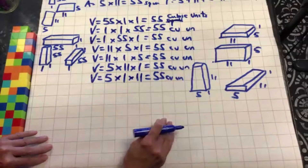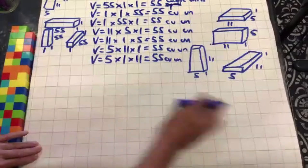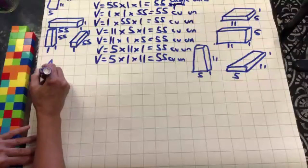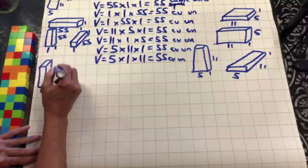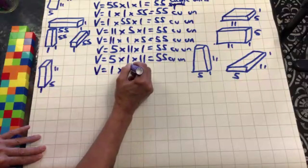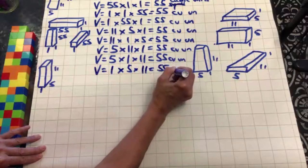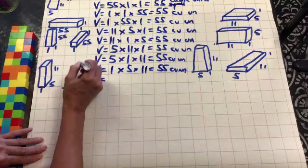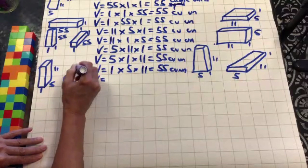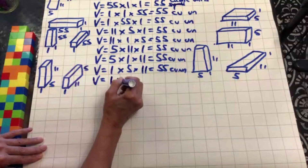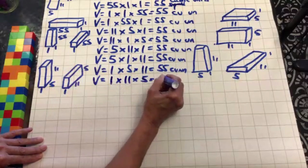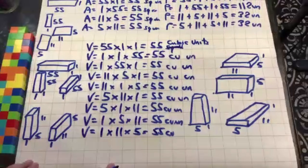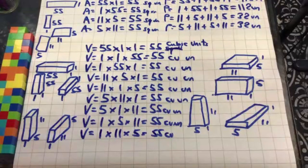Then we do 1 by 5 by 11, and 1 by 11 by 5. Our volume section is done. We're done with the number 55 — have a great day and I'll see you next time!